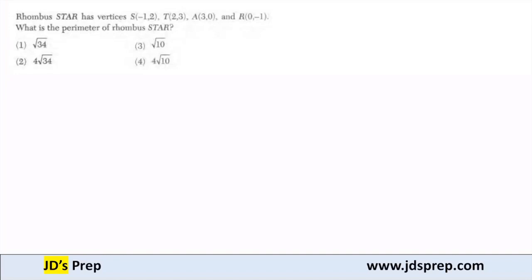Welcome to JD's Prep. In this example, rhombus STAR has vertices S(-1, 2), T(2, 3), A(3, 0), and R(0, -1). What we're trying to find is the perimeter of the rhombus.